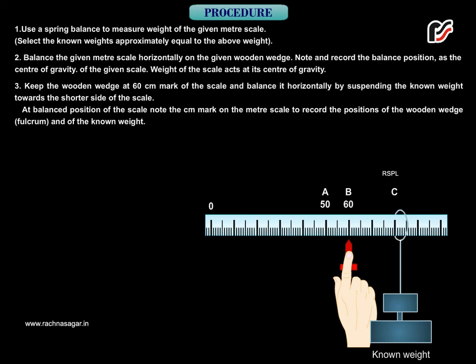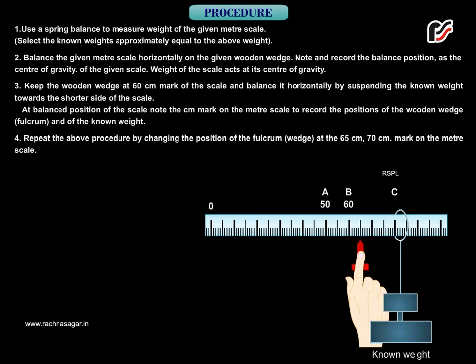At balanced position of the scale, note the cm mark on the meter scale to record the positions of the wooden wedge, fulcrum and of the known weight. Repeat the above procedure by changing the position of the fulcrum wedge at the 65 cm, 70 cm mark on the meter scale.